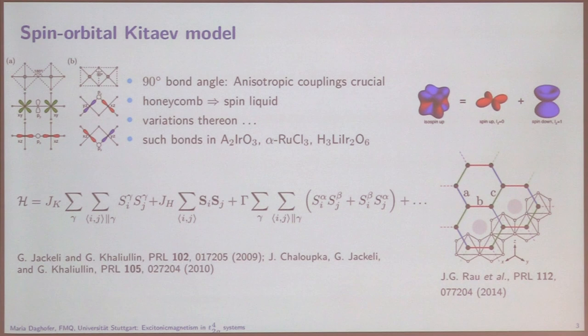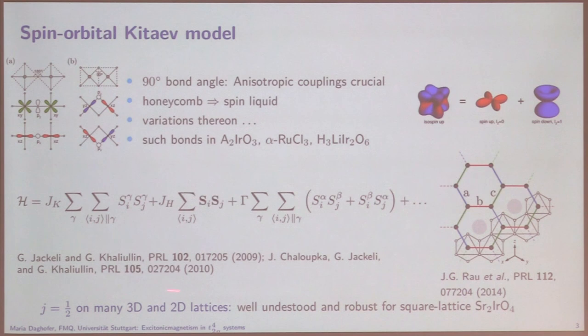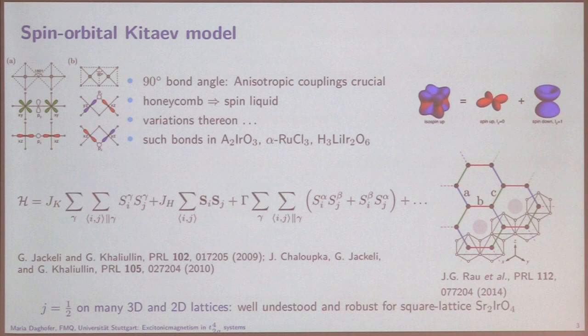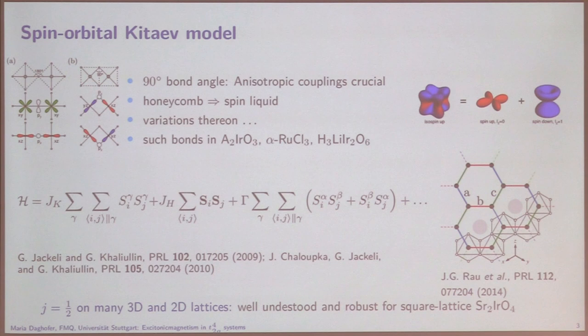This happens in many lattice geometries. The square lattice is really well understood, and what is impressive is how robust the J=1/2 is there. One can even dope it a little bit, one can photo-excite it, and still one can mostly explain it with the J=1/2. If one does the right experiments one will find differences to a pure J=1/2, but it is a very robust picture — one hole in these J=1/2 systems.